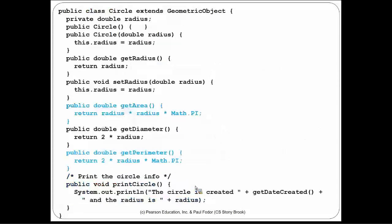The subclass Circle extends GeometricObject and adds the data field radius. It has constructors, accessors and mutators for radius, then implements the abstract methods from the superclass. getArea returns radius squared multiplied by Math.PI. Note that here we do not specify 'abstract' because this method is concrete — it is implemented right here. We also have getDiameter, which returns 2 multiplied by the radius.